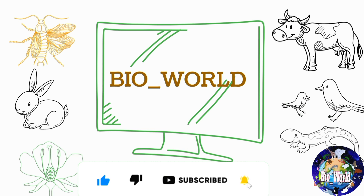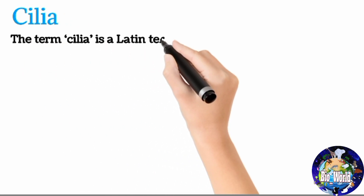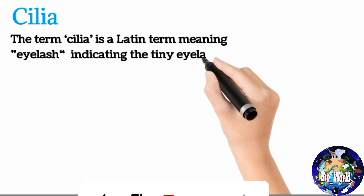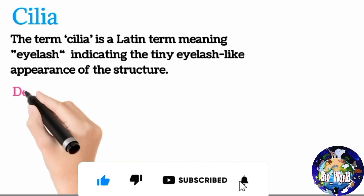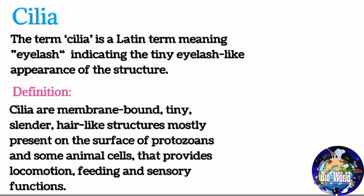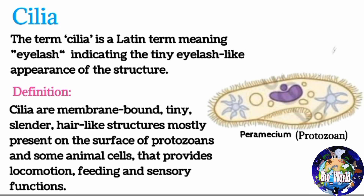Today we are going to discuss about cilia. The term cilia is a Latin term meaning eyelash, indicating the tiny eyelash-like appearance of the structure. Cilia are membrane-bound, tiny, slender hair-like structures mostly present on the surface of protozoans and some animal cells, providing locomotion, feeding, and sensory functions. Cilia are most prominent in protozoans of the phylum Ciliophora, which are characterized by the presence of cilia.